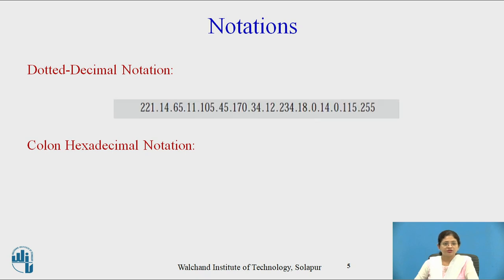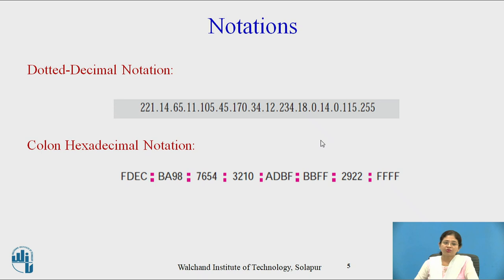This figure shows dotted decimal notation, which is the same as that of the IPv4 dotted decimal notation. IPv6 also provides colon hexadecimal notation, where there are a total of 8 sections separated by the colon special symbol.